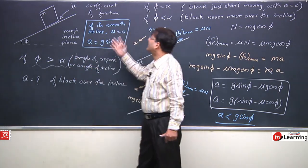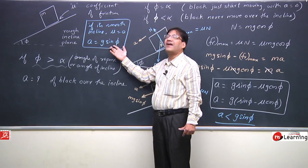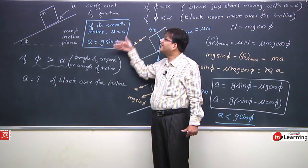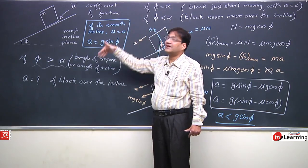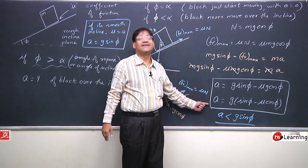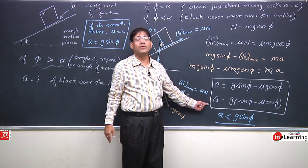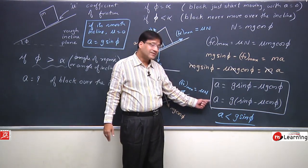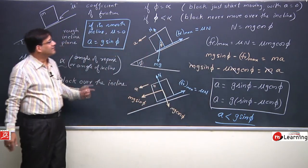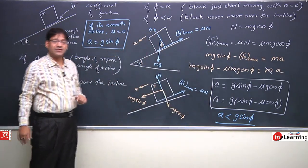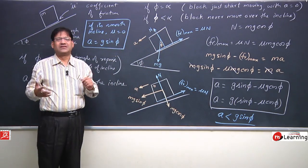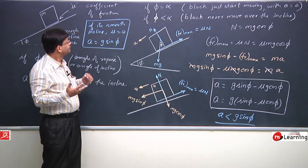Without friction, the block would fall with maximum acceleration g sinφ, but due to friction this acceleration is reduced. I have solved it completely. Please note down the situation carefully; I will now explain one more situation.